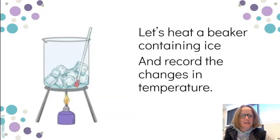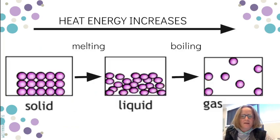So let's heat a beaker containing ice and record the changes in temperature. You're probably aware that when we heat a beaker with ice in it, the ice is a solid so the particles are arranged in a regular pattern. They are very close together and they are vibrating around a fixed position. As we heat the ice it will start to melt so the particles will lose their fixed pattern. They will stay close together but they will be able to roll past each other within the shape of the container.